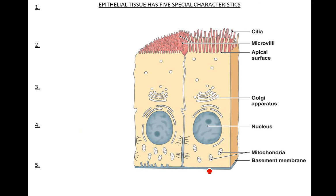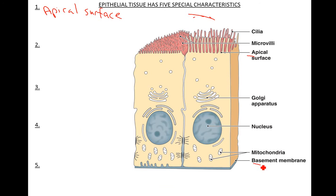If I were to say what are some characteristics of epithelia, I would say one — you have something called the apical surface. You have the apical surface right here. What is it? It touches the open space. The apical surface touches the open space. The other side is going to be your basement membrane. Now, these are actual structures, but they are also special characteristics — basement membrane.